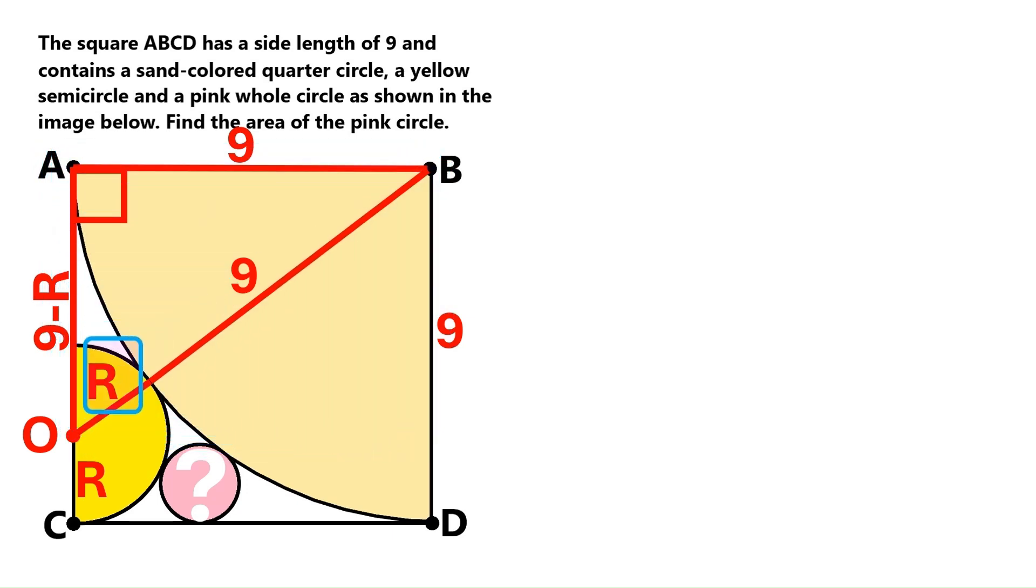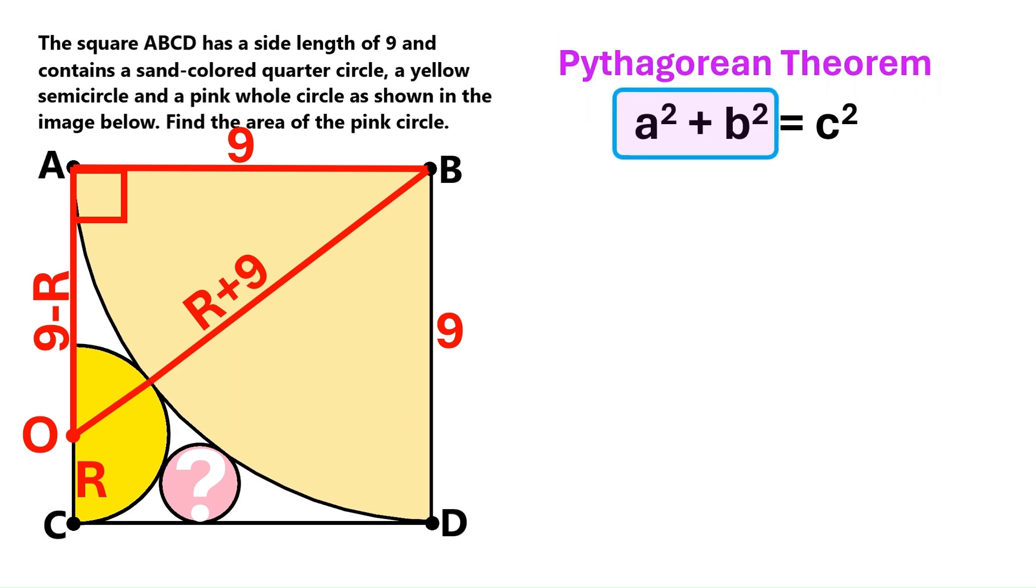We can add this, and this. The hypotenuse of our right triangle turns out to be capital R plus 9. Now according to the Pythagorean theorem, the sum of the squares of the legs of a right triangle, that are its shorter sides, is equal to the square of its hypotenuse, that is its long side.